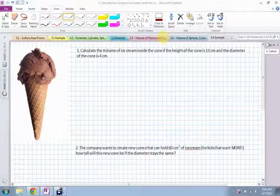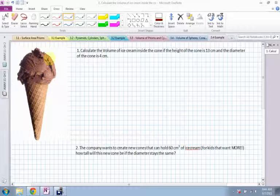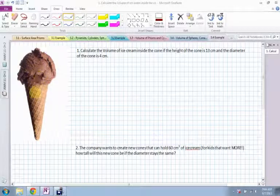Alright, so for this example we have a cone and I want you to figure out how much volume of ice cream is inside the cone. So just inside the cone, we're not counting the top spherical part. We could do that too, but that would be kind of a more complex object. So just the volume of ice cream inside the cone, if the cone has a height of 13 centimeters and a diameter of the cone is four centimeters.